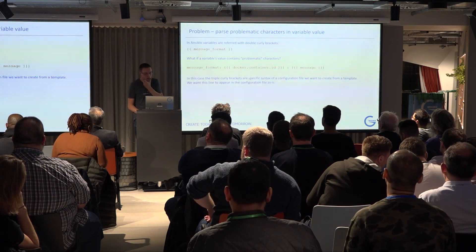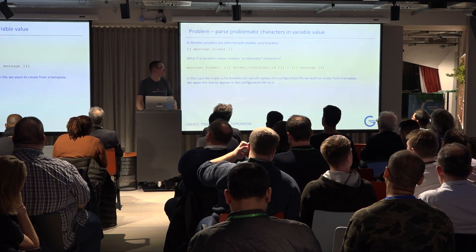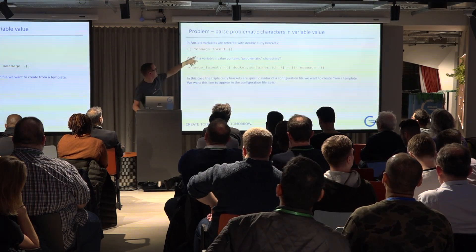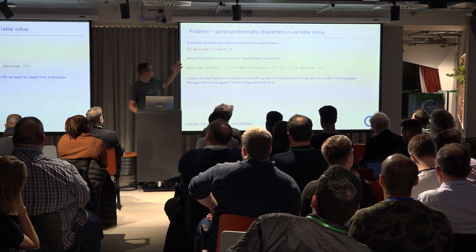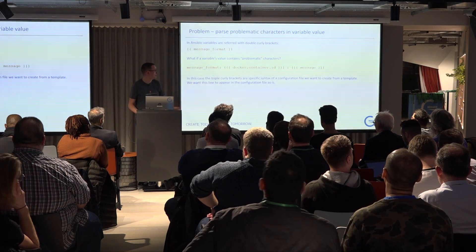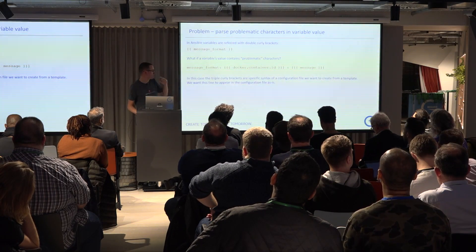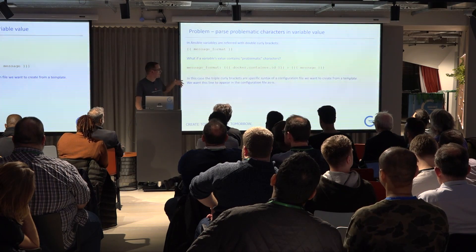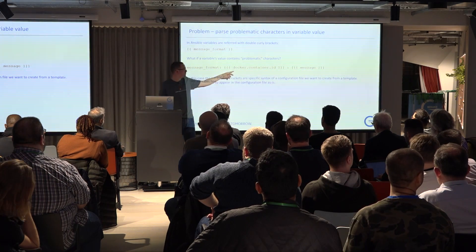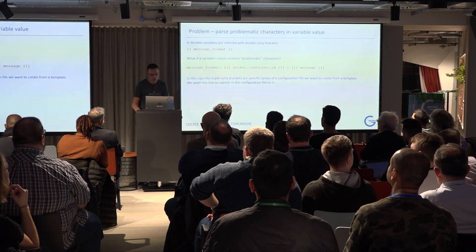Another problem I came across is how to deal with problematic characters in a variable value. We know that variables are referenced in Ansible with double curly brackets or braces. But what do you do if the value of the variable actually contains double curly brackets or other problematic characters? This is a real-life example — I was working on deploying a plugin which had a configuration file, and one of the lines of the configuration file should be exactly as written with those double curly brackets. It's not a reference to an Ansible variable; it's just the syntax of the plugin I was trying to configure. We want this line to appear in our file exactly as-is.